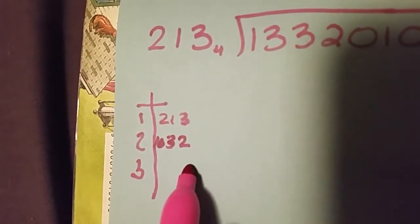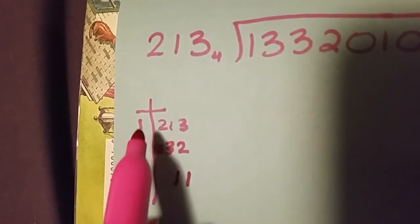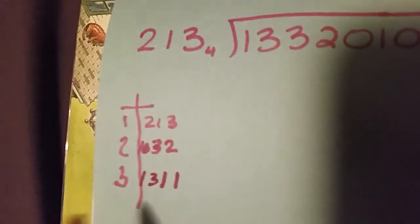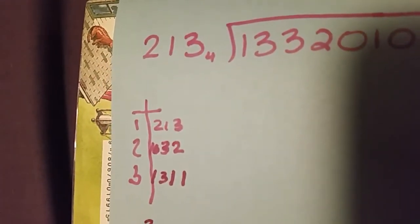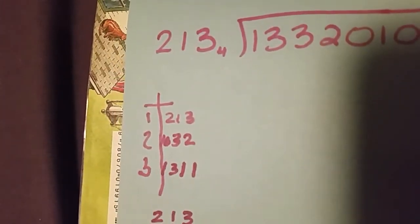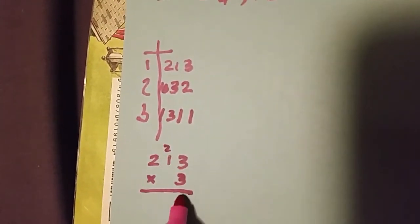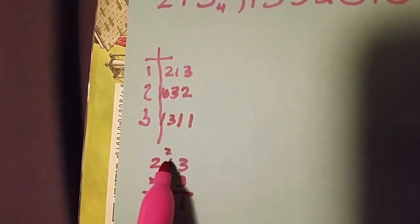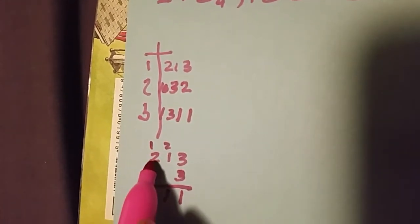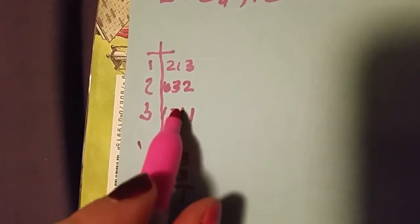Now we add these two numbers together to get the third row. 3 and 2 is 5 — that's one left over, one group of four to carry. One and one and three is five again — one to leave behind, one to carry. One and two makes three, then we've got the one to add in. To verify: take 2·1·3 times 3. Three times three is nine, which is two groups of four, one leftover. Three times one is three plus two is five — one leftover, one group of four. Three times two is six plus one more is seven — a group of four and three leftovers. So our multiplication table is confirmed.